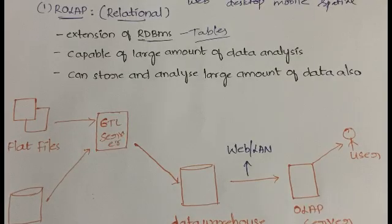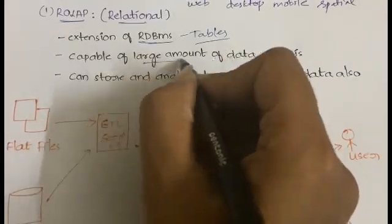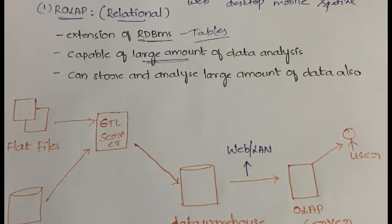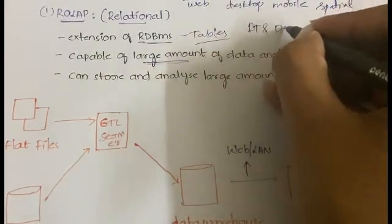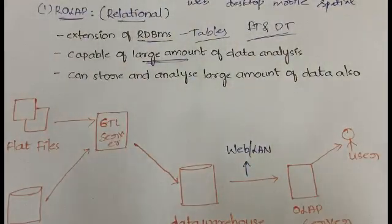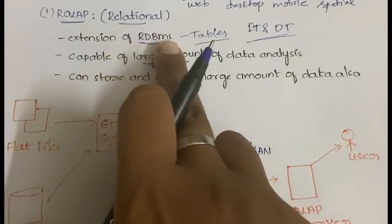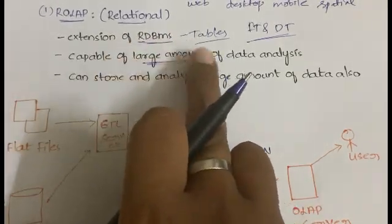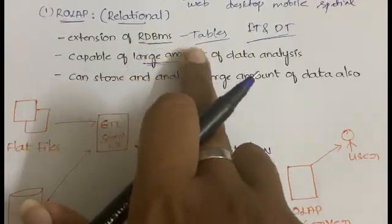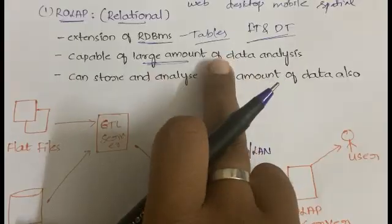Because ROLAP processes large amounts of data, the processing speed is comparatively a bit slow. The fact tables and dimension tables are stored in the form of relations — not in textual or any other form — making it an extension of RDBMS that can handle and analyze large amounts of data.